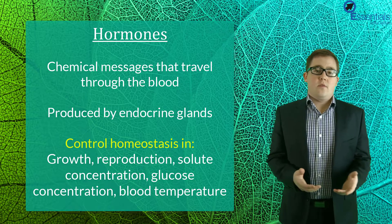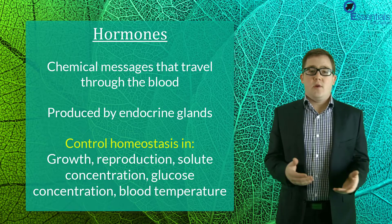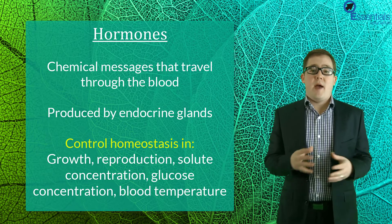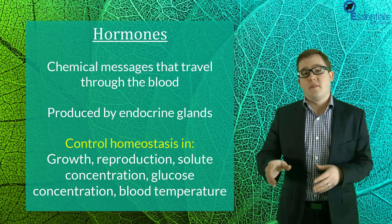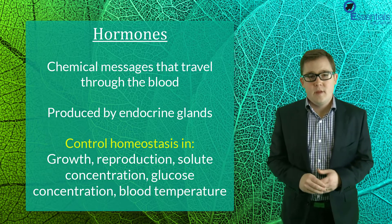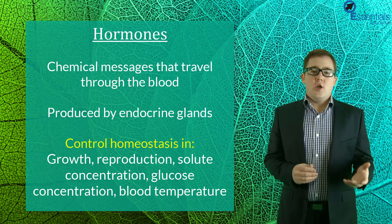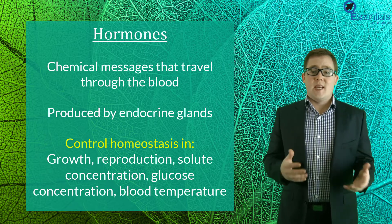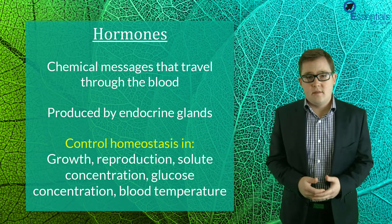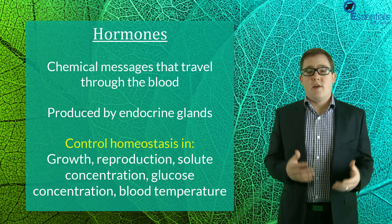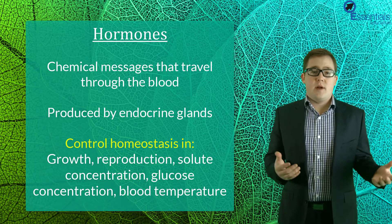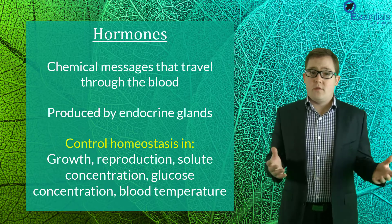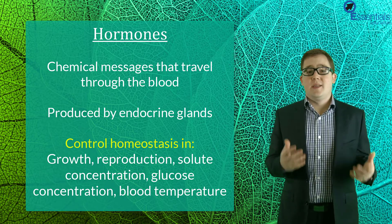Unlike nerves, hormones are actually chemicals that are produced by cells and carried in the blood to bring about an effect somewhere else in the body. They're usually produced by endocrine glands and control activities or maintain homeostasis in a wide range of areas from things like growth, reproduction, salt concentration, glucose concentrations, and blood temperature.